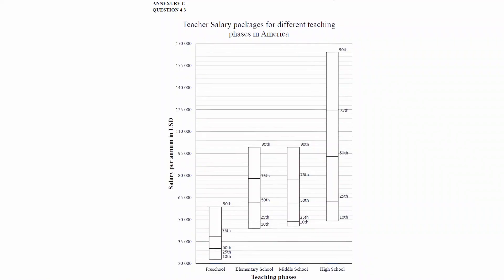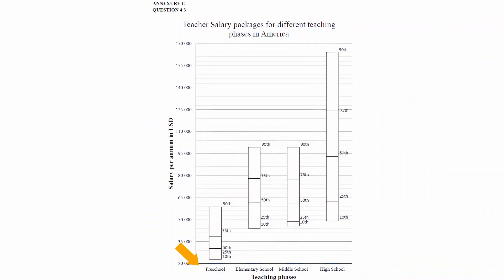On Annexure C we are given four box and whisker plots. The first plot represents data for preschool teachers, the second for elementary school teachers, the third for middle school teachers, and the fourth for high school teachers. The salary per annum in US dollars is represented on the y-axis and the teaching phases are represented on the x-axis.